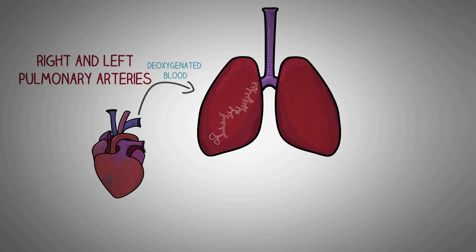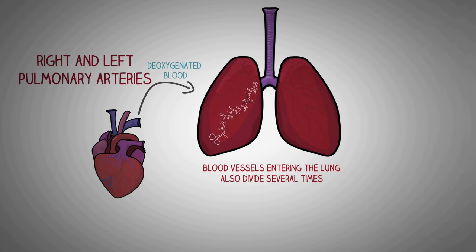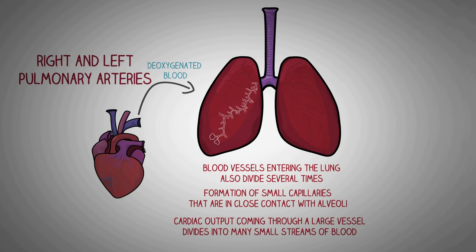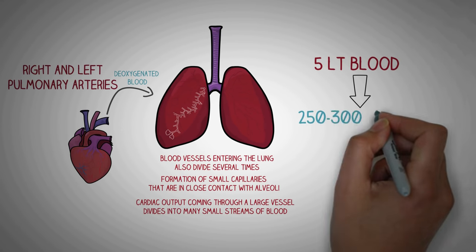The heart pumps all deoxygenated blood to the lungs through the right and left pulmonary arteries. Just as a single bronchus divides 20 to 25 times before the formation of alveoli, a similar branching happens with the large blood vessels entering the lungs. These blood vessels divide several times, leading to the formation of small capillaries in extremely close contact with the alveoli. This causes the cardiac output to divide into many small streams, exposing the 5 liters of blood coming through the heart to almost 250 to 300 million alveoli per minute, enabling rapid gaseous exchange.